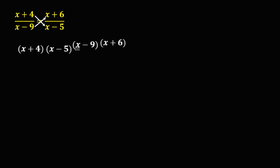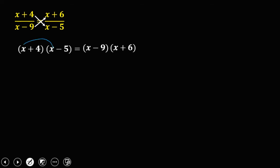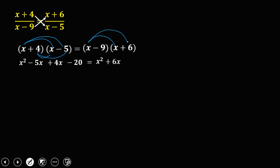Using the FOIL method: x times x is x squared, x times negative 5 is negative 5x, 4 times x is 4x, and 4 times negative 5 is negative 20. On the right side: x times x is x squared, x times 6 is 6x, negative 9 times x is negative 9x, and negative 9 times 6 is negative 54.